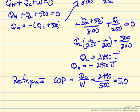In other words, if this is our freezer in our refrigerator, and we're removing 2490 joules by putting in with electricity just 500 joules, in the back of the refrigerator, we're rejecting almost 3000 joules.